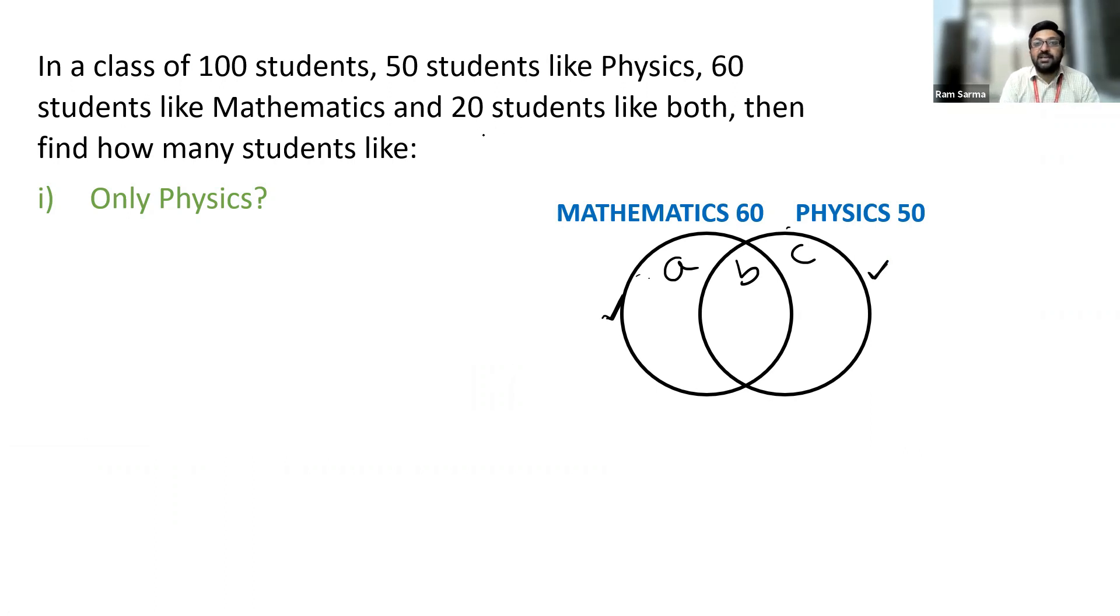Now you are given that 20 students like both. So B is 20. As we discussed earlier, A plus B is 60. B is 20. Now we have to find the value of A, that's 40.